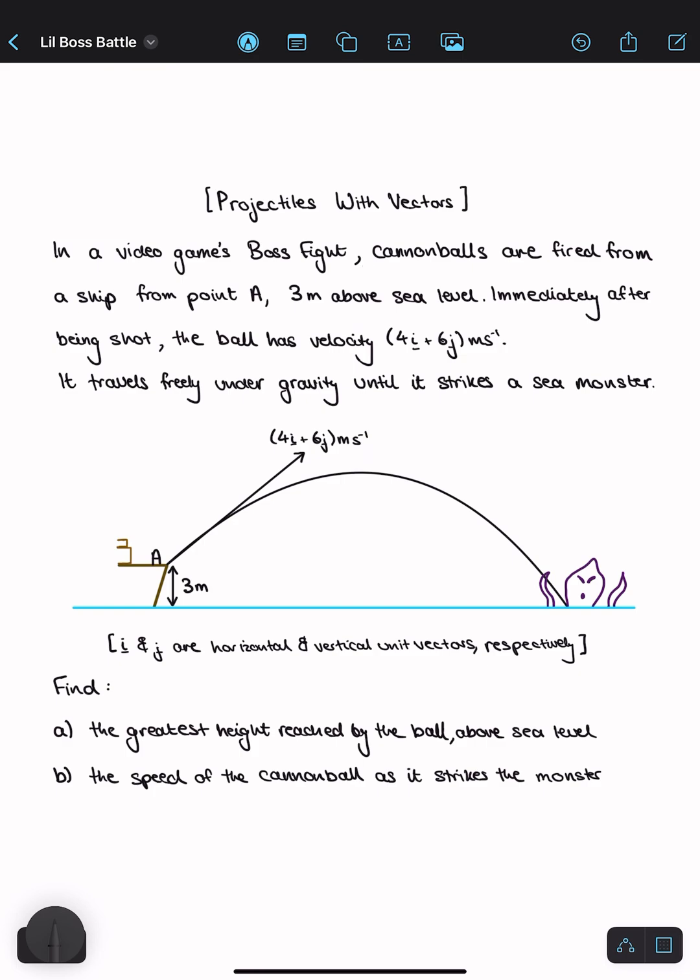In a video game's boss fight, cannonballs are fired from a ship from point A, 3 meters above sea level. Immediately after being shot, the ball has a velocity of 4i plus 6j meters per second. It travels freely under gravity until it strikes a sea monster.